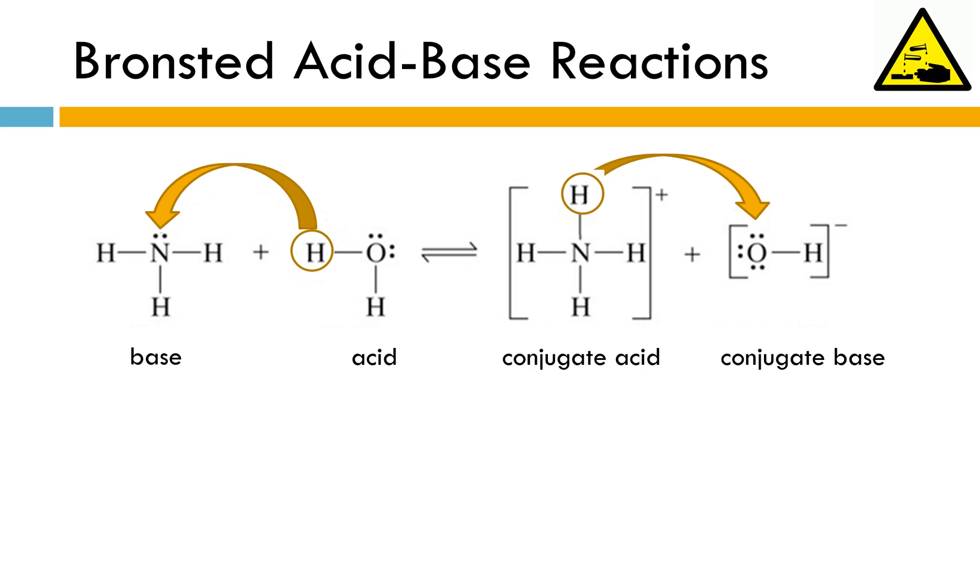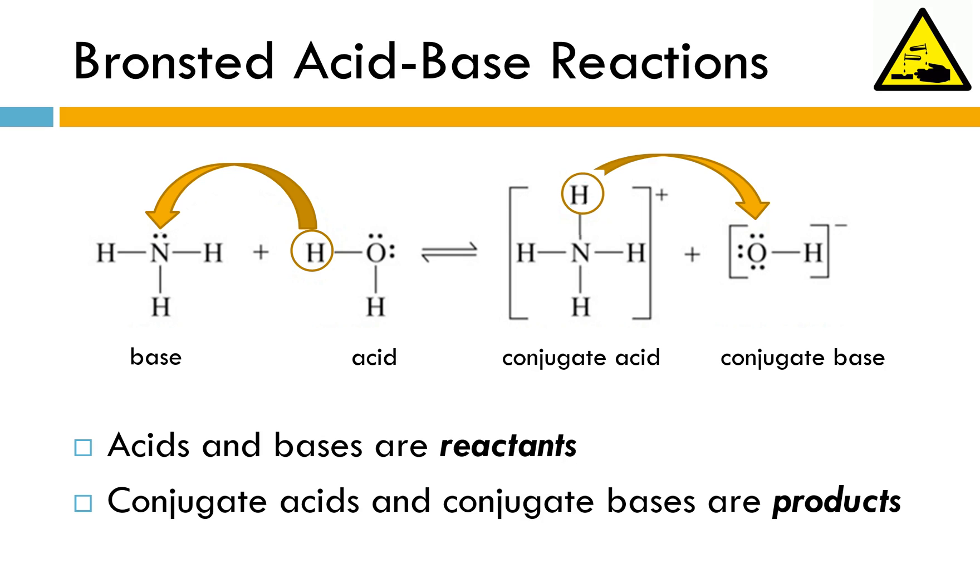So really what you can think of is the acids and bases are going to be on the reactant side. Conjugate acids and conjugate bases are on the product side. So acid and base we're talking about the forward reaction. Who's the proton donor? Who's the proton acceptor? When we talk about conjugate acids and bases it's the reverse reaction. The same idea. Conjugate acid is the proton donor. Conjugate base is a proton acceptor.